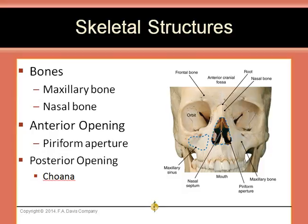The nose is formed by the maxillary bone and the nasal bone. The anterior opening is called the piriform aperture, and the posterior opening is the choana. The nose is surrounded by, or in contact with, the cranial cavity, the orbit, the maxillary sinus, the oral cavity, and the nasopharynx.